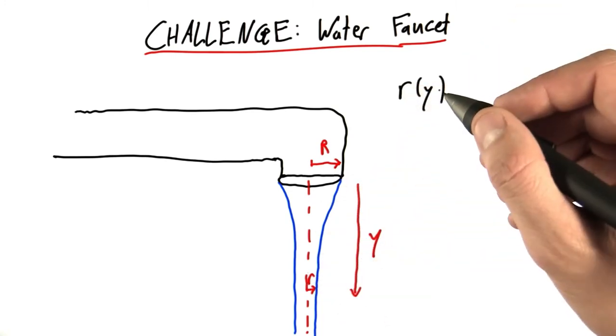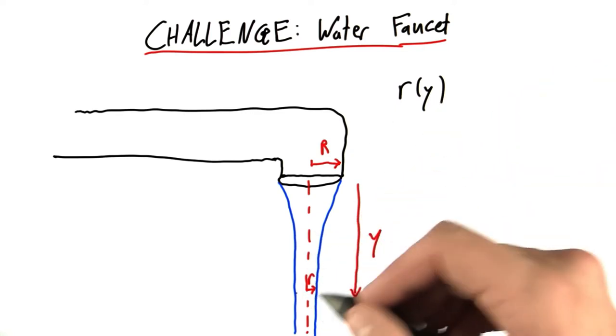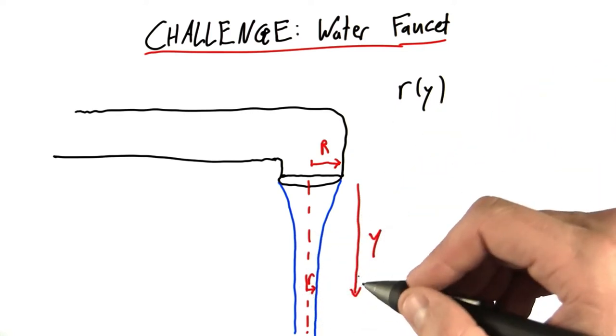The question here: can we find a mathematical equation that represents the radius of this column of water as a function of y?